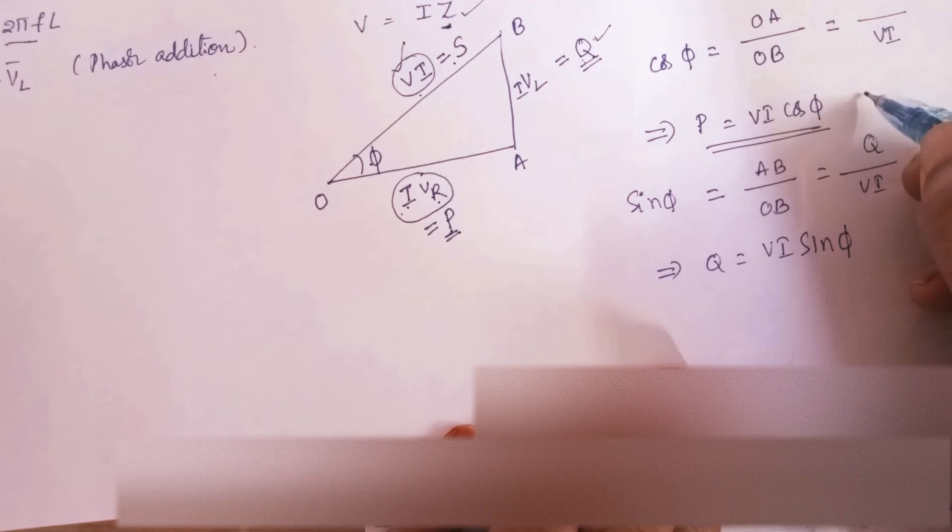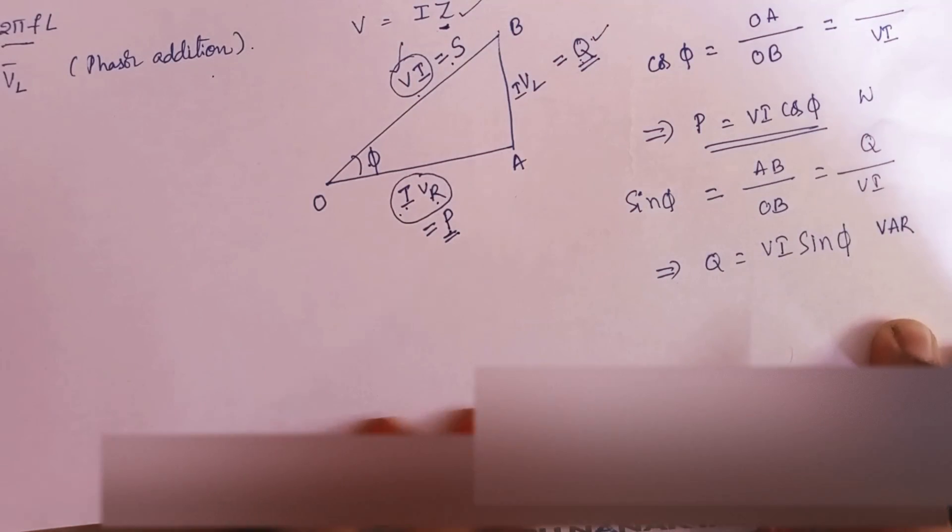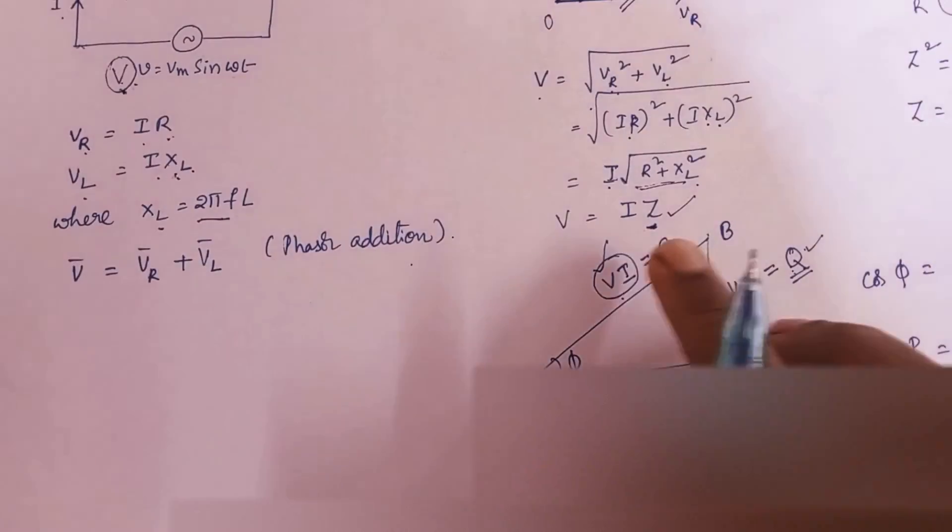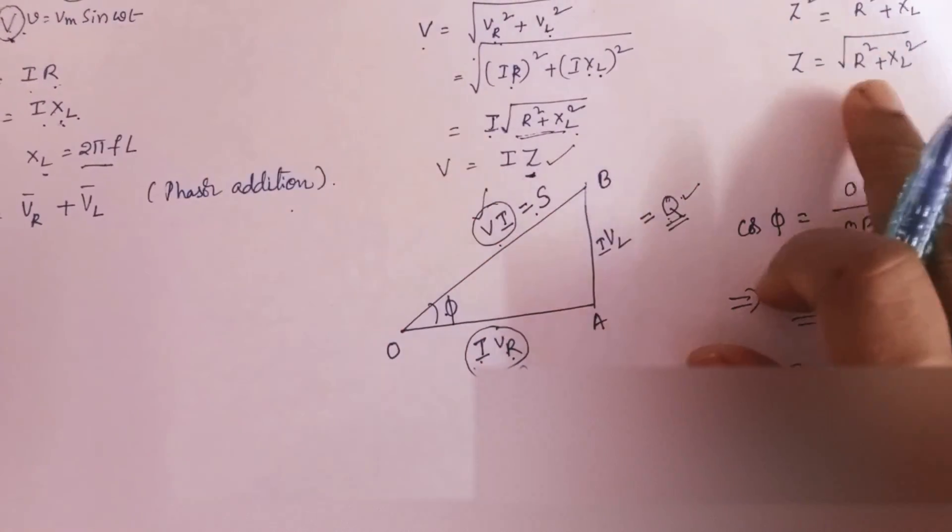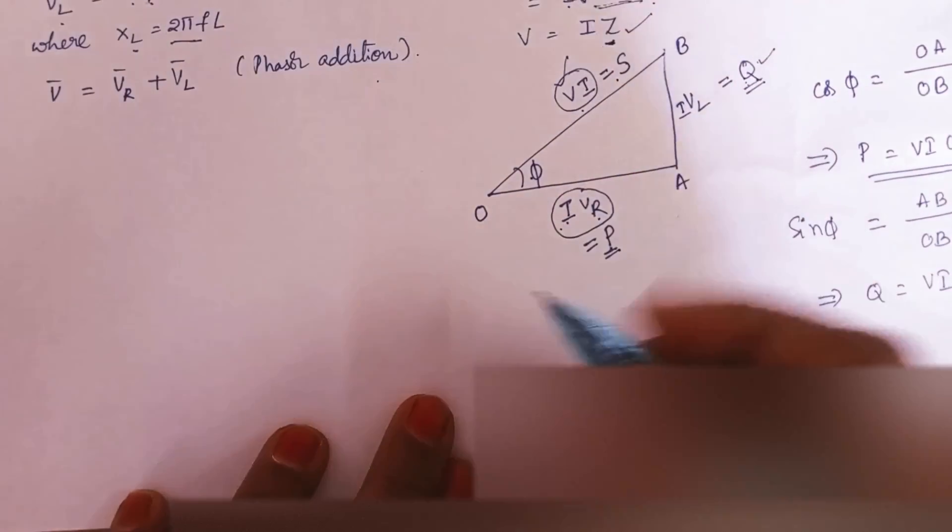So the unit for the real power is watt. And the unit for the reactive power is volt ampere reactive. So this is how you need to relate the voltage relation, impedance relation and then power relations.